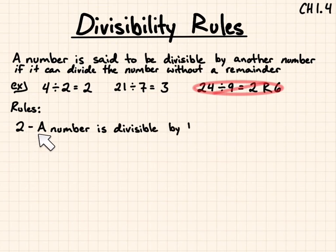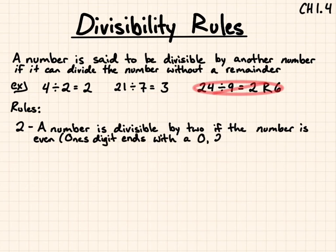Rule 2: A number is divisible by 2 if the number is even. That means the ones digit ends with a 0, 2, 4, 6, or 8. Here are some examples. 456, is that divisible by 2? Yes, because the last digit, the ones digit, ends in a 6.